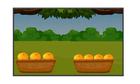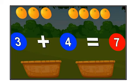Now children, there are three oranges and in another basket four more oranges. What we will do now? We will count them. In one bucket there are three oranges, and in the other bucket there are four oranges. Now let's count them all together: one, two, three, four, five, six, seven. Very good children, so there are seven oranges.